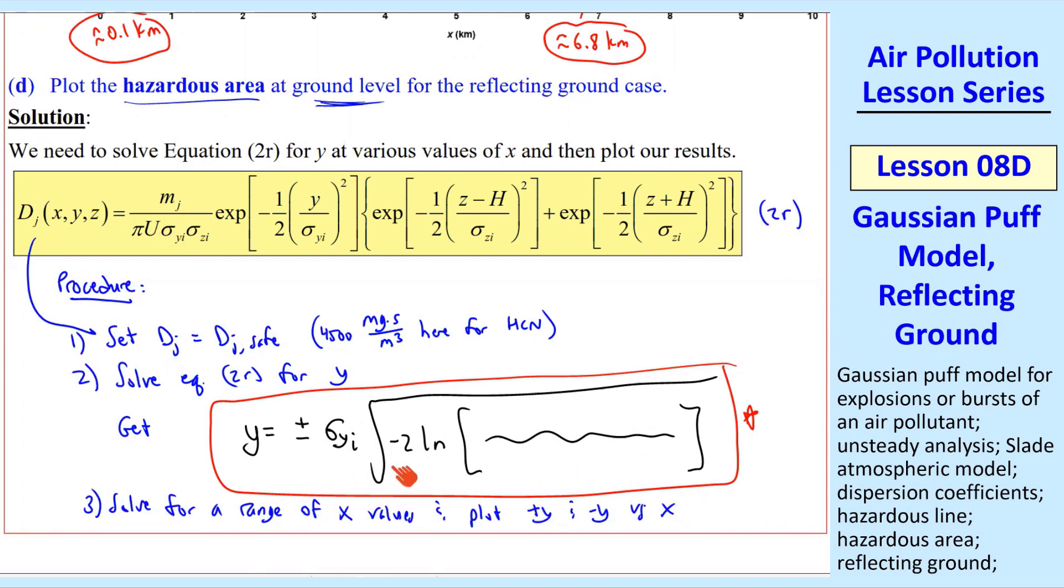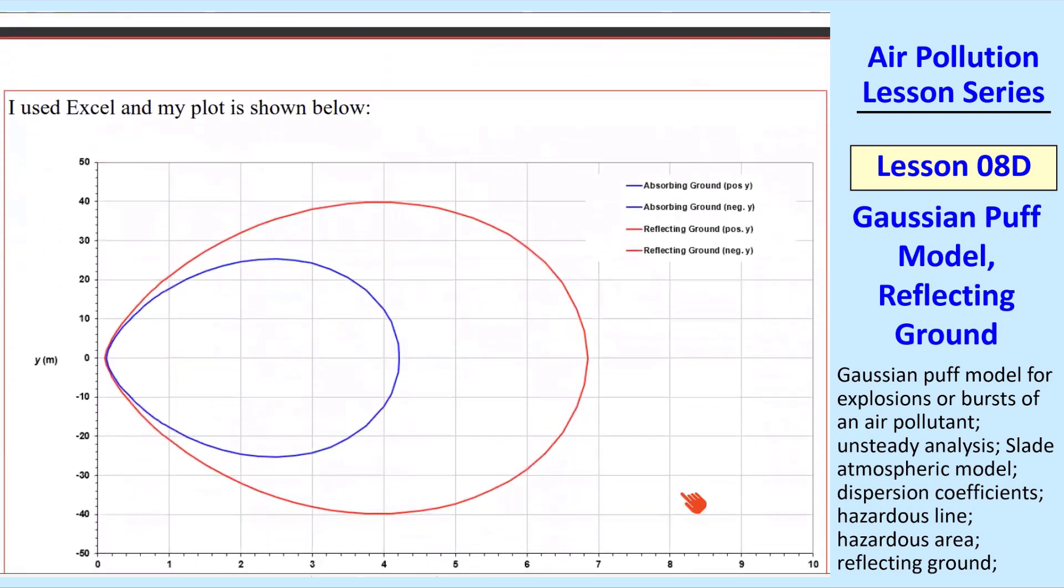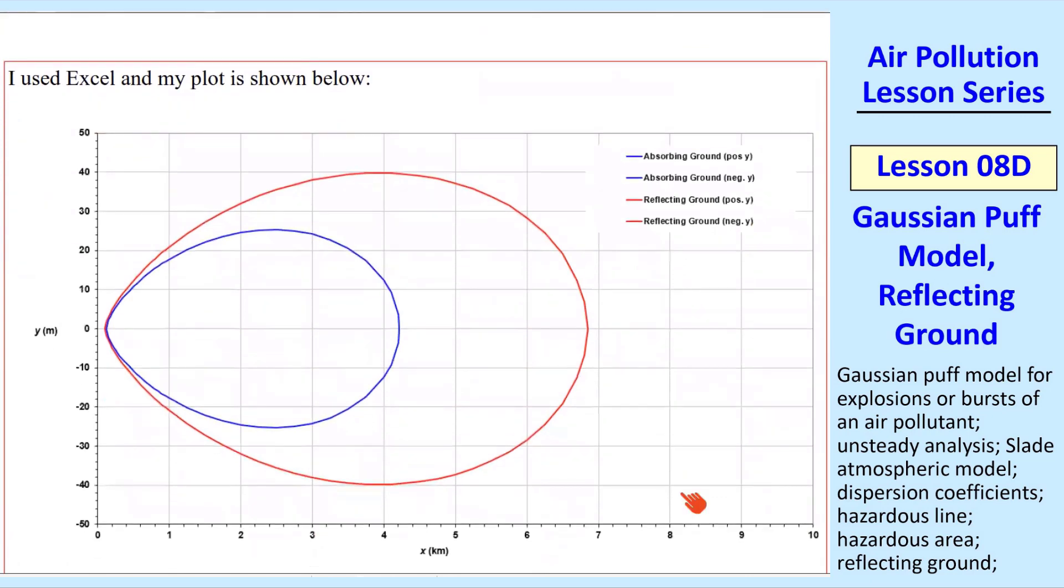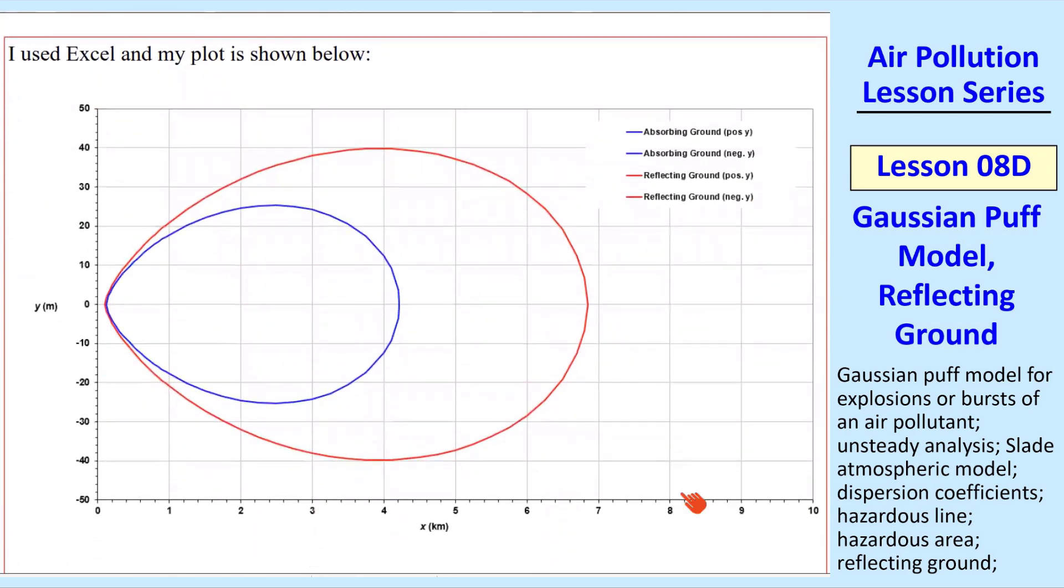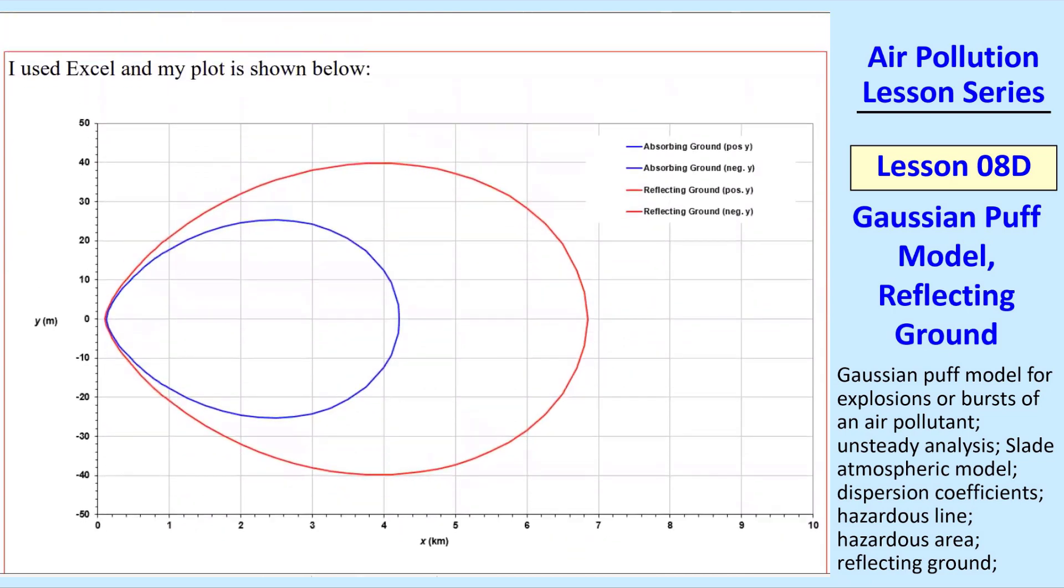This is what I did in Excel. We get similar shapes as we had before with the plume, as we might expect. I plot both the absorbing and reflecting case, absorbing in blue and reflecting in red. So you should be able to get this.